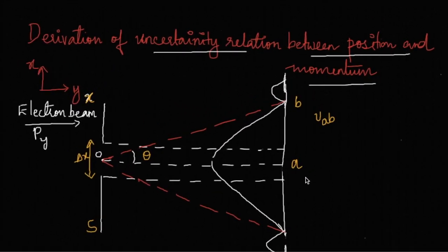Moving on to the derivation of uncertainty relation between position and momentum, we consider a beam of monoenergetic electrons moving with velocity v along the y direction. The electron beam here is moving in the y direction. Note here this direction is taken as y and the perpendicular direction is taken as x.